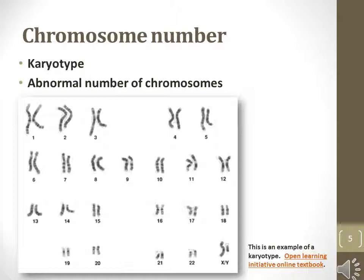Karyotype refers to the number of chromosomes found in the genome of a normal organism. The human karyotype contains 46 chromosomes. Abnormalities are possible, including three copies of the 21st chromosome, which causes Down syndrome.